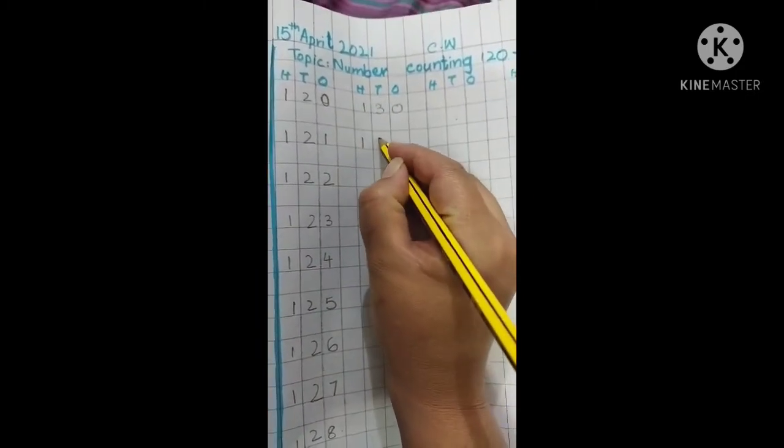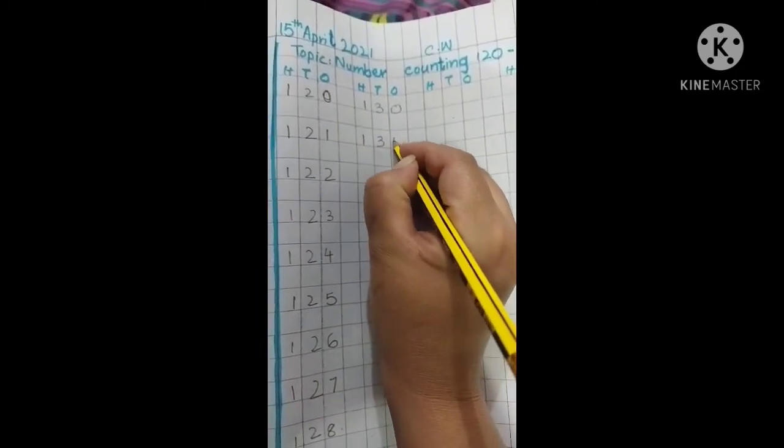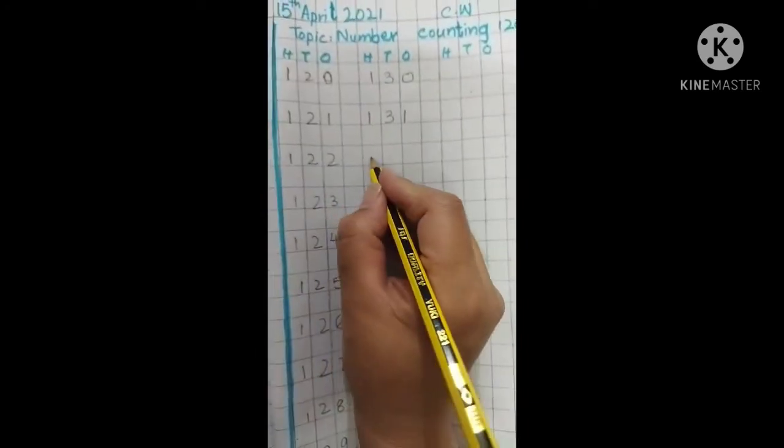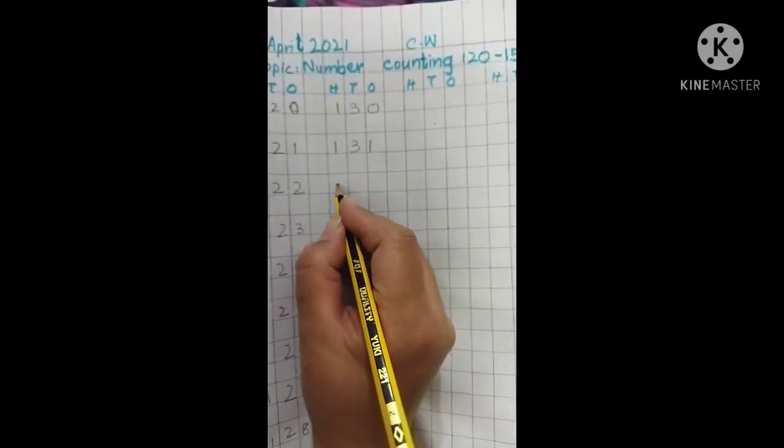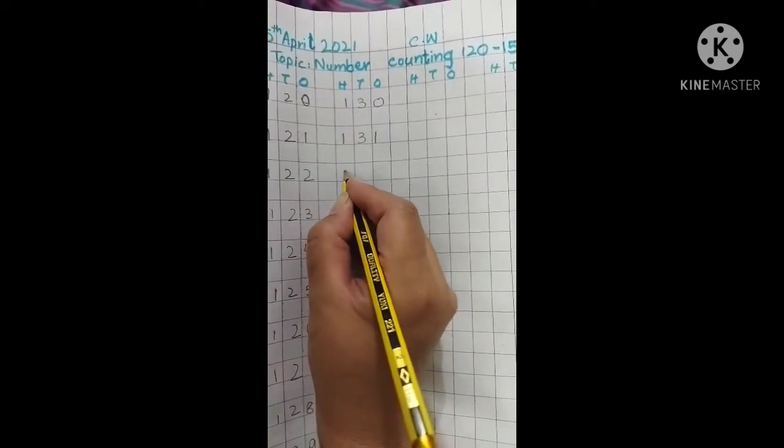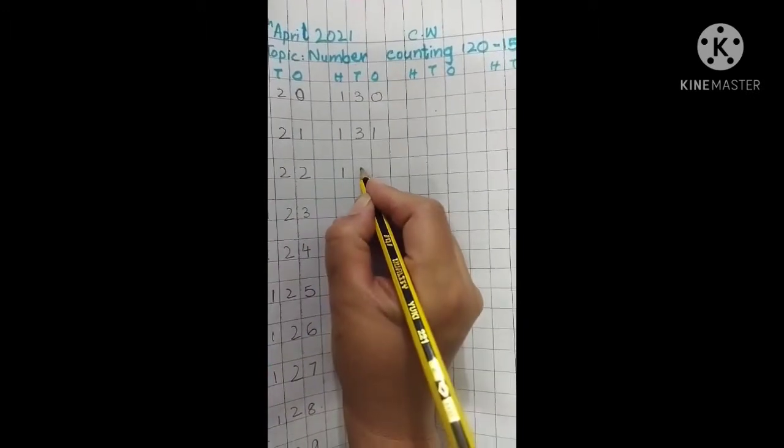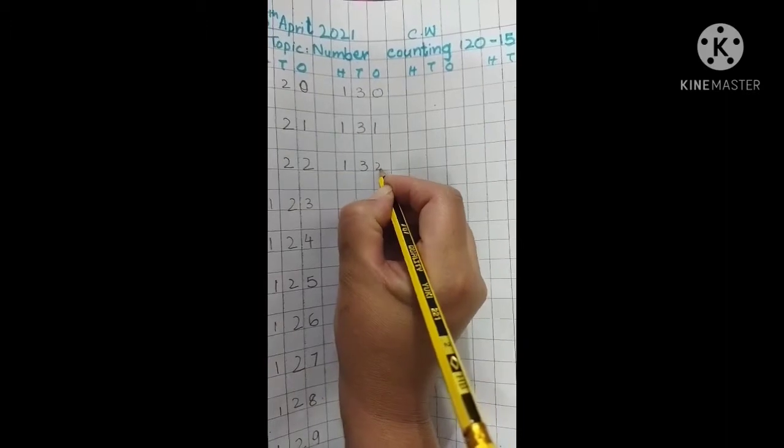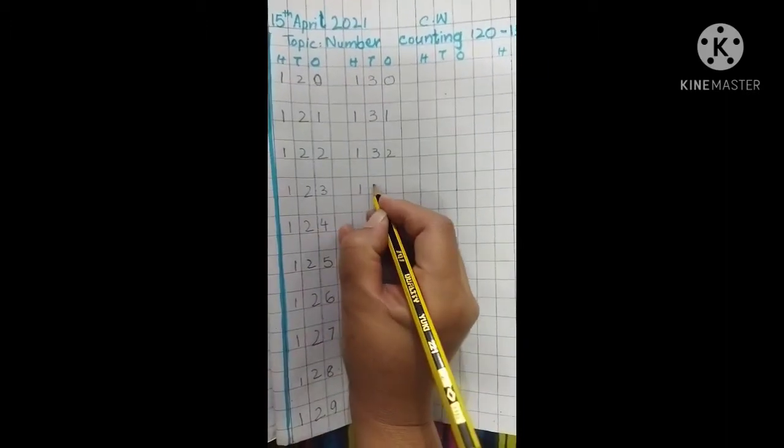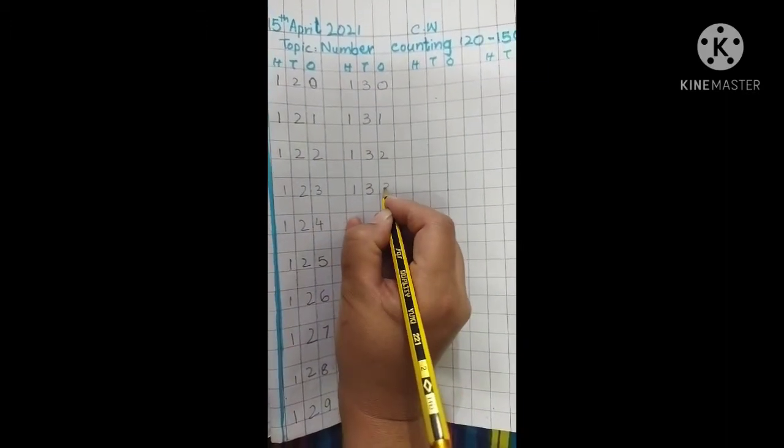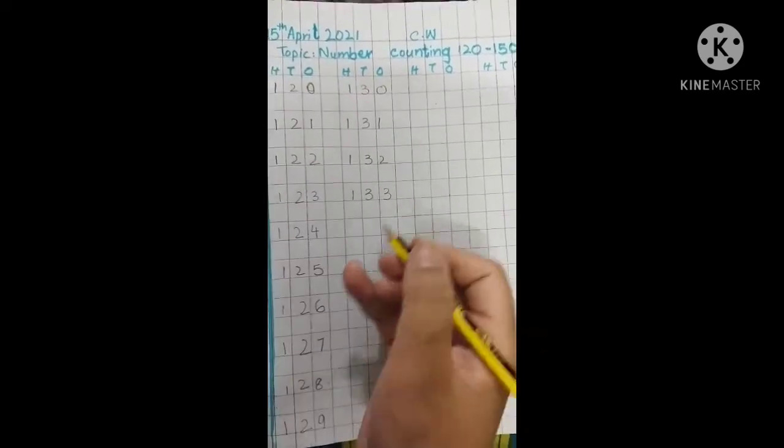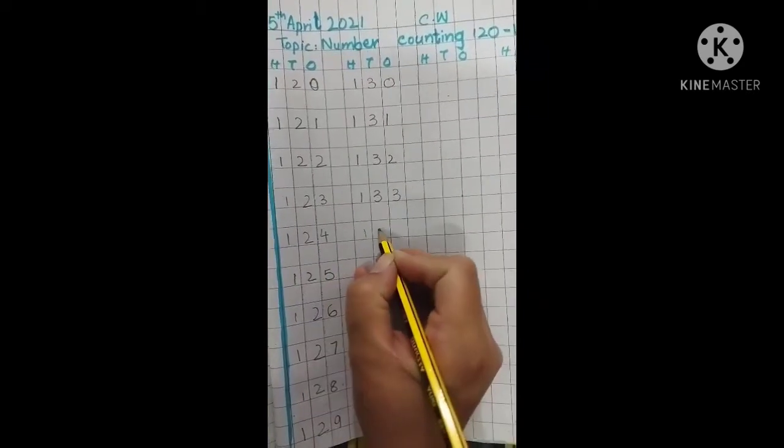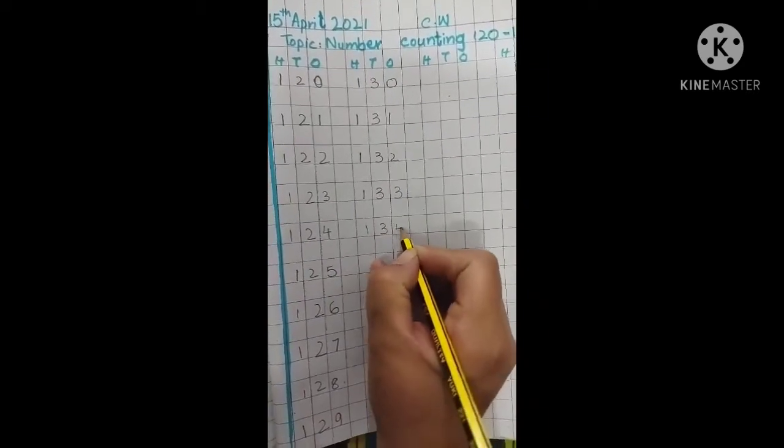Now start with me again: 131. We will go slow because you have to start with me and you will stop with me writing. Start your counting with me and stop your counting with me. 132, 133, 134.